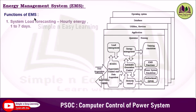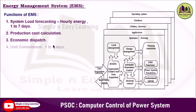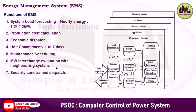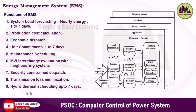The functions of EMS include: system load forecasting (hourly or weekly energy), production cost calculation, economic dispatch, unit commitment, maintenance scheduling, megawatt interchange evaluation with neighboring systems, security constrained dispatch, transmission loss minimization, and hydro-thermal scheduling up to seven days.